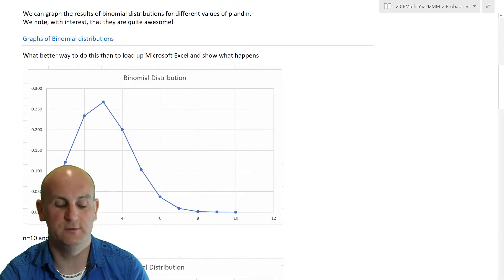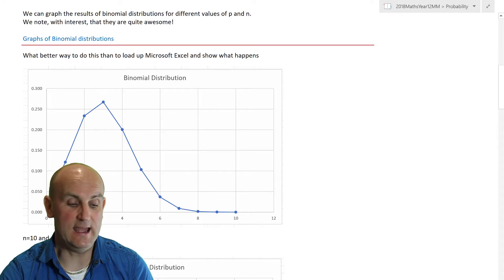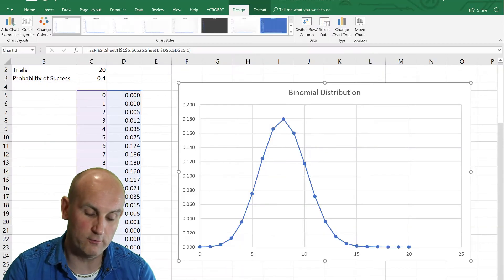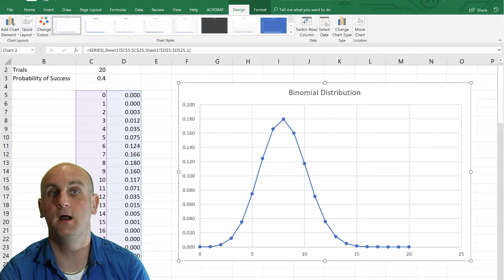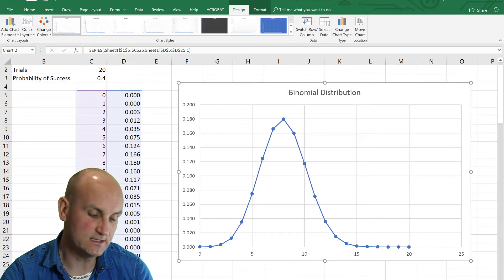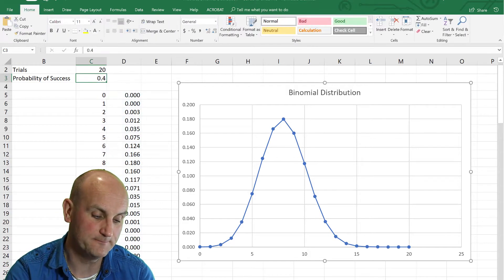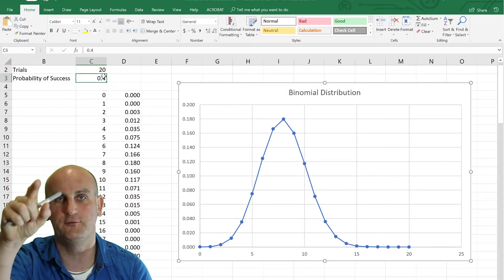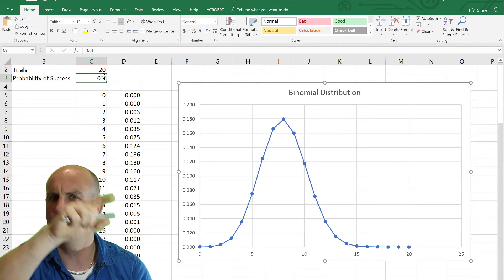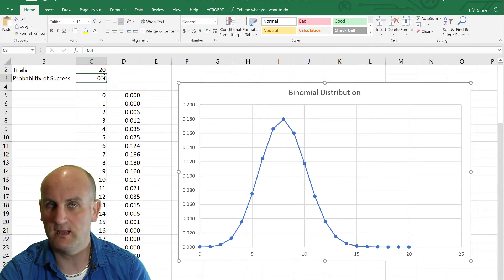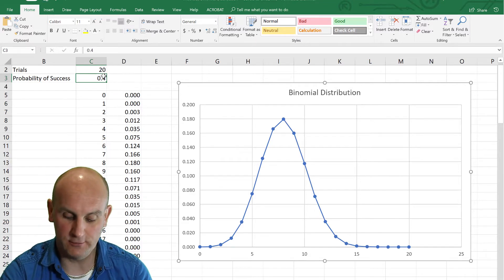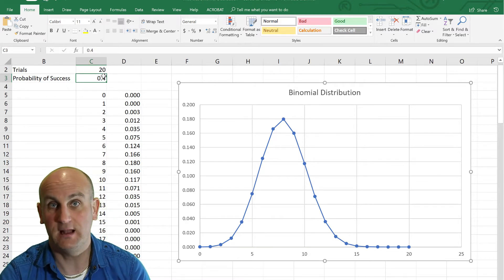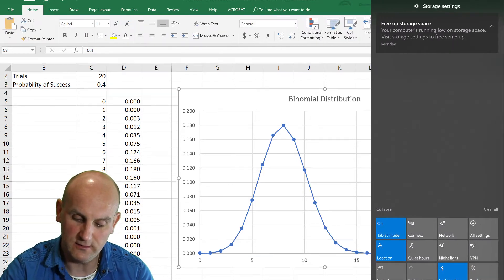Now we can graph the results of binomial distributions for different values of P and N and we notice they are quite awesome. What I'm going to do is load up Microsoft Excel which I already have playing here. So what can we notice? First things first, I've got my number of trials as 20 and my probability of success as 0.4. We notice that beautiful jaggedy curve. It looks a little bit like a bell curve doesn't it? That's going to come in really important later on.